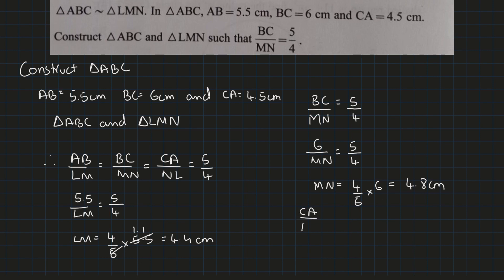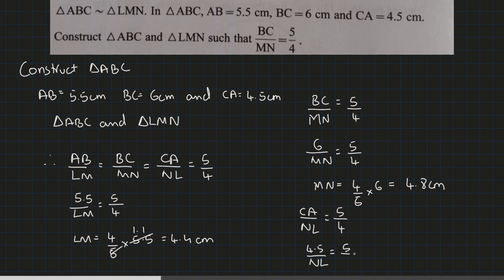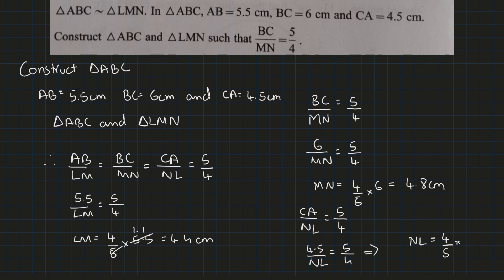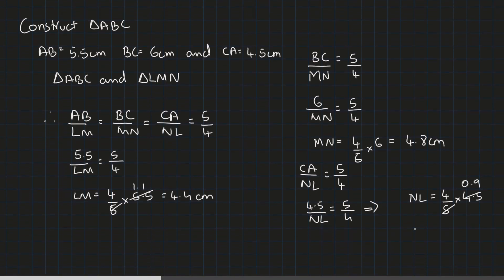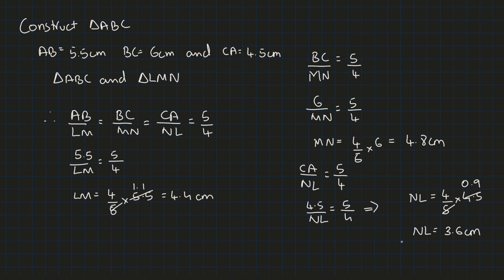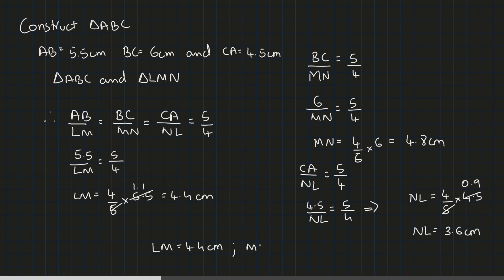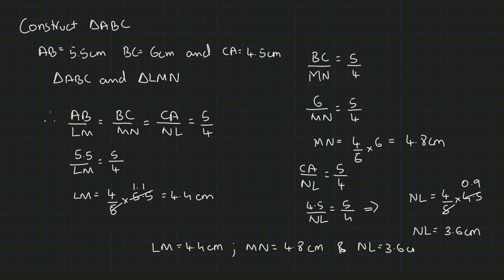For AC upon LN which is equal to 5 upon 4, we substitute the value of AC as 4.5 upon LN, equal to 5 upon 4. We cross multiply to get 4 upon 5 into 4.5. Cancelling 4.5 and 5 gives 0.9, and multiplying 4 into 0.9 gives 3.6 centimeters. So the sides of triangle LMN are: LM equals 4.4 cm, MN equals 4.8 cm, and NL equals 3.6 cm.